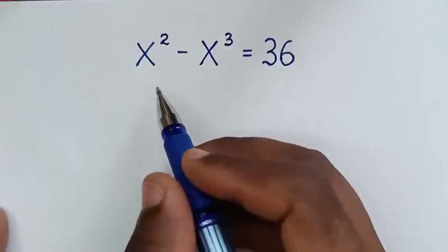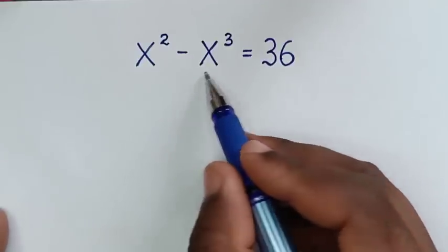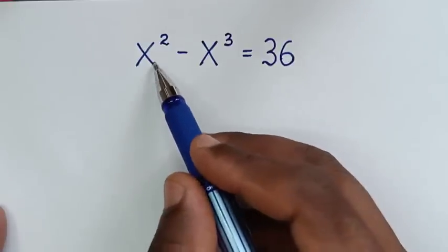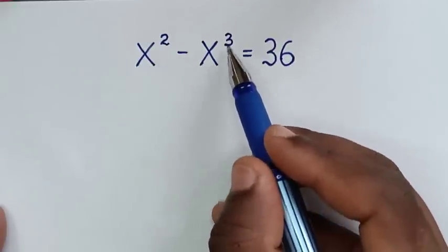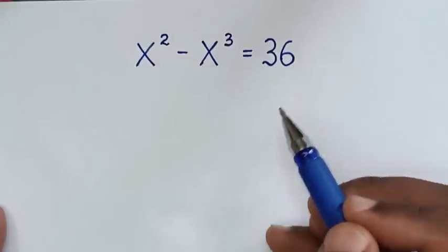Hello, you are welcome to solve this math problem which is x squared minus x cubed is equal to 36.